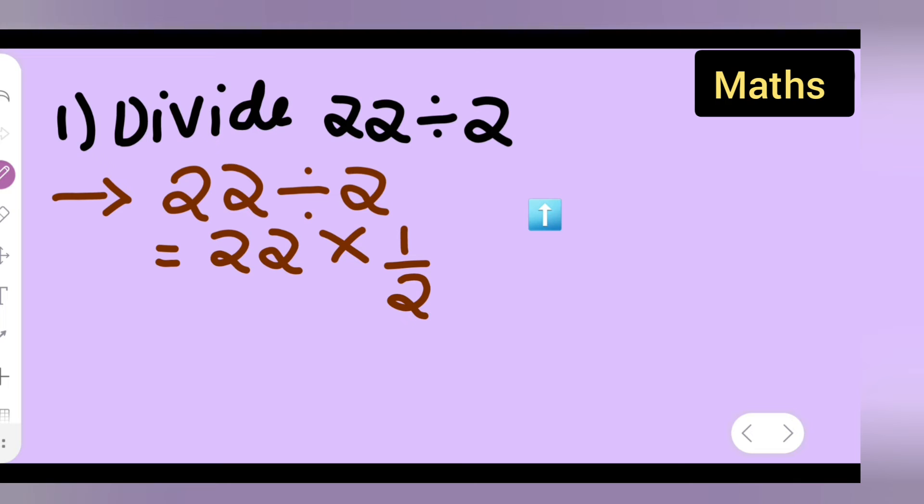Then the next step: I have multiplied this numerator. You have to write it over 2. Okay.